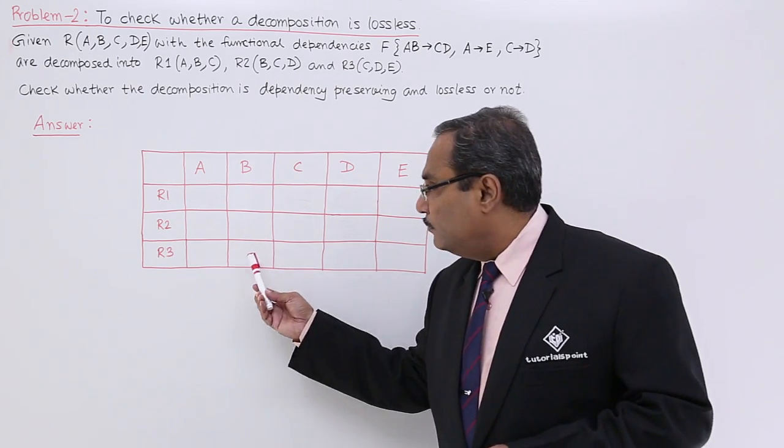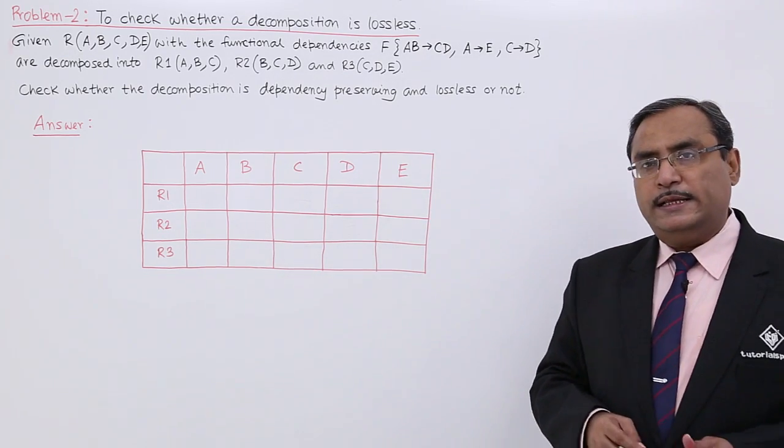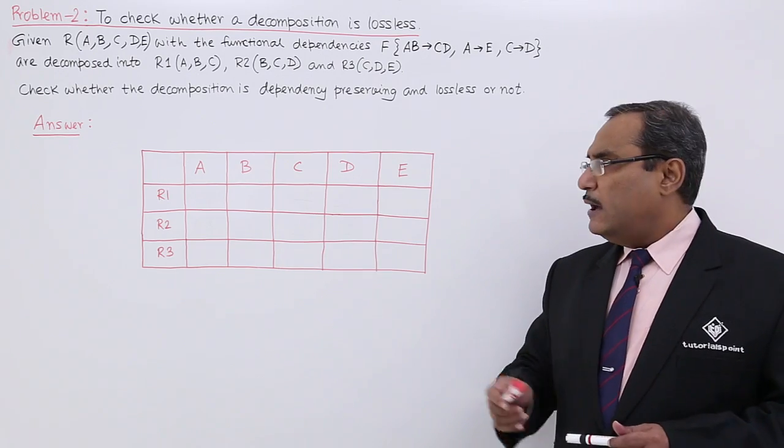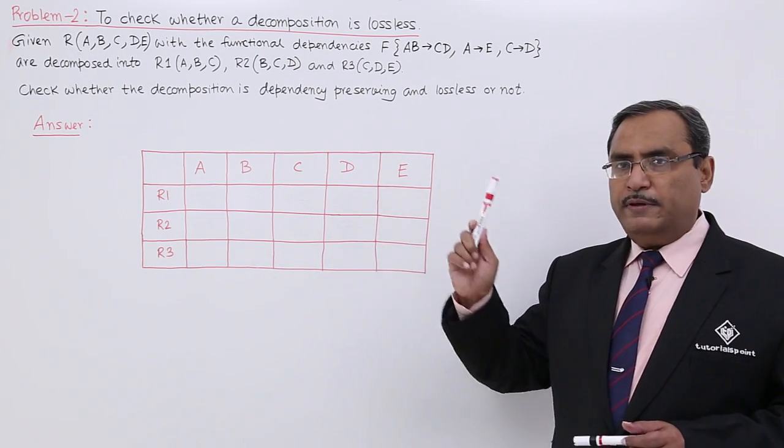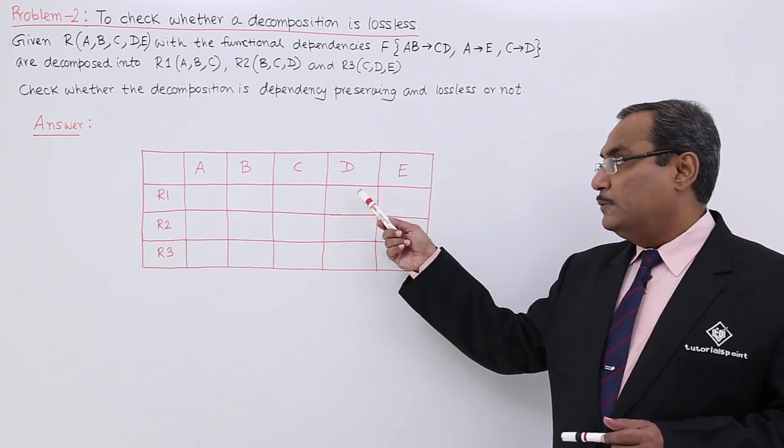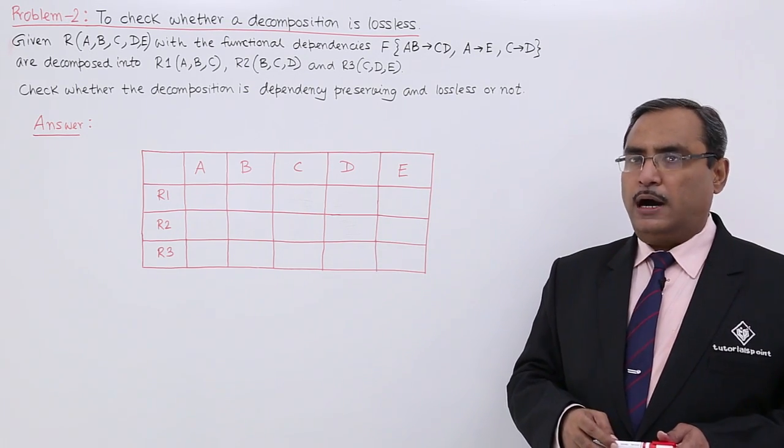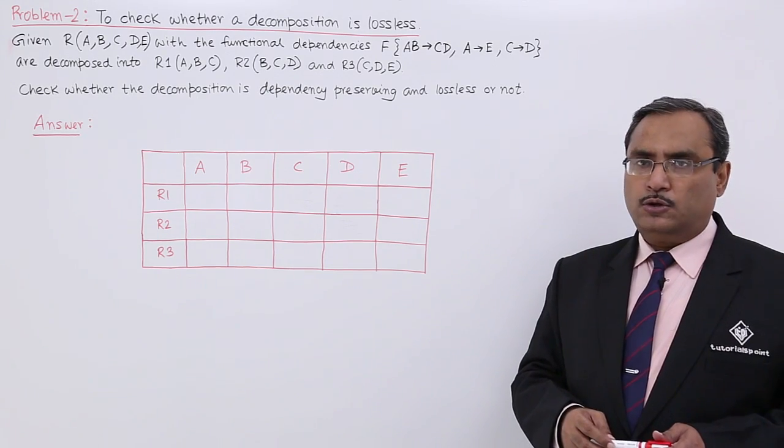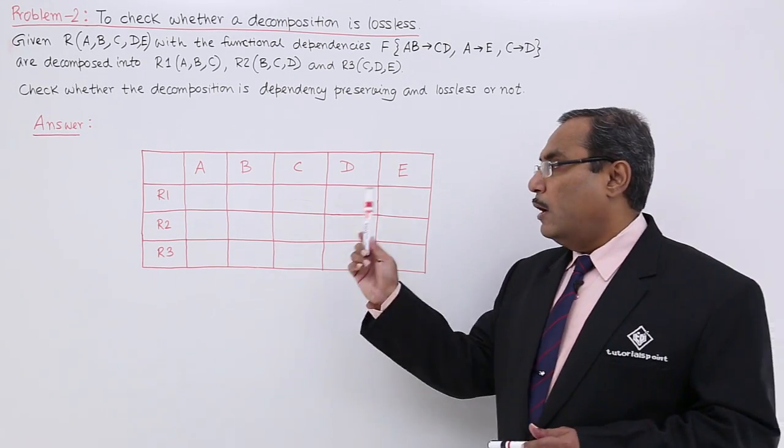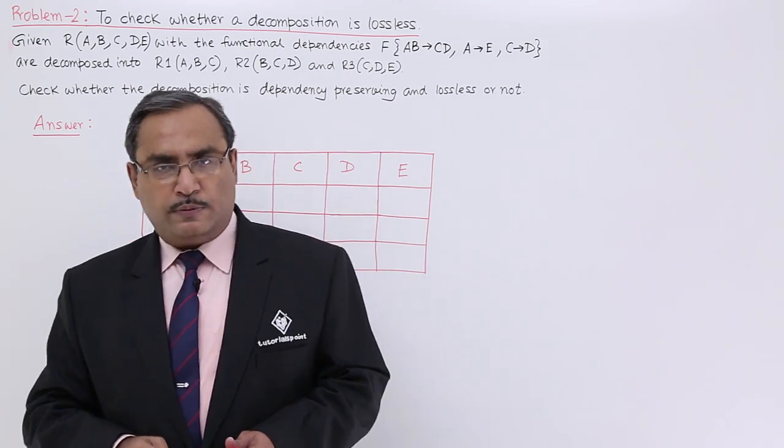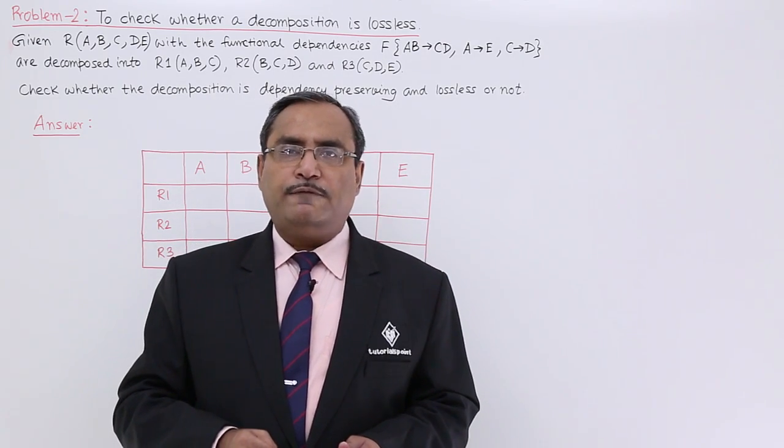At first we have formed this table, the name of the table is table lossy. It will have five columns because we are having five attributes and it will have three rows because we are having three decomposed relations from R. They are R1, R2 and R3. Now, how to fill up this table lossy table with alpha and beta?